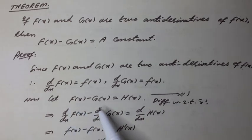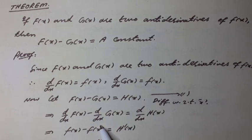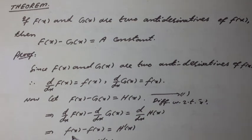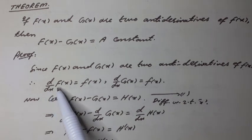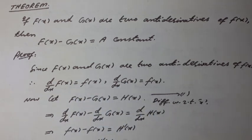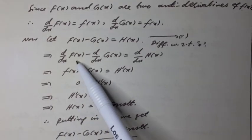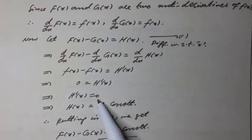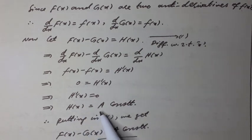Differentiating with respect to x, we can write dF/dx minus dG/dx equal to dH/dx. This can be written as f(x) minus f(x) — because dF/dx = f(x) and dG/dx = f(x) — equal to H'(x). It can be written as H'(x) equal to 0, or H(x) is equal to a constant. You can use C for the constant.